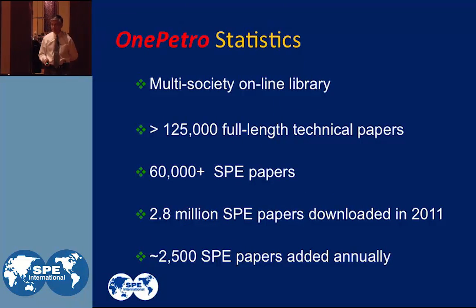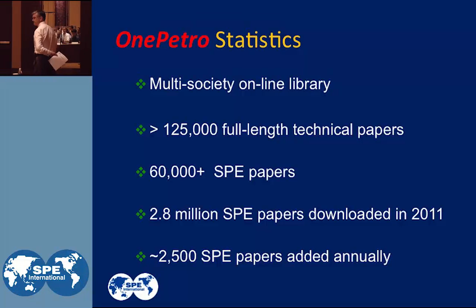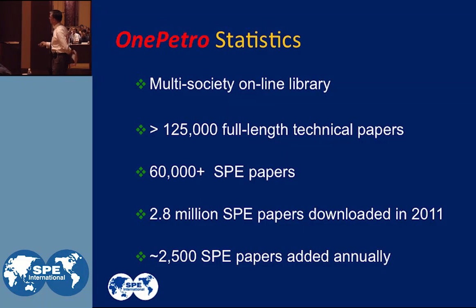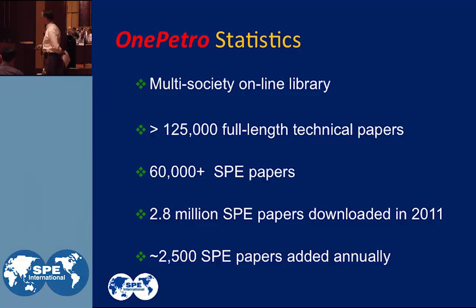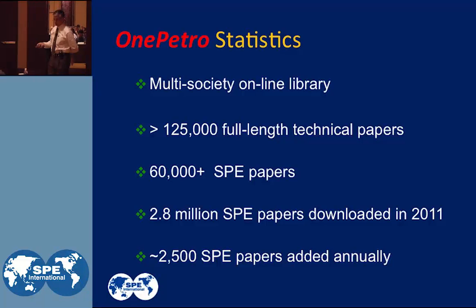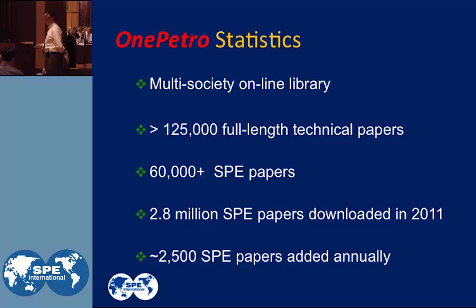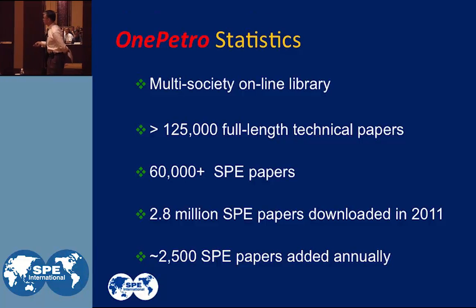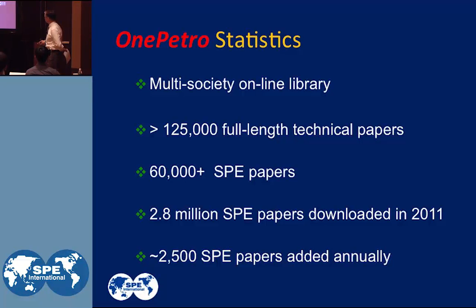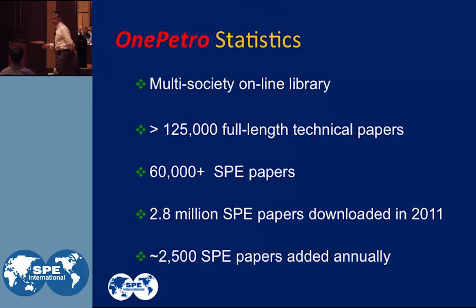A few guidelines and discussion about OnePetro statistics: OnePetro is the multi-society online library. It has over 125,000 full-length technical papers; about 60,000 of those are SPE papers, alongside NACE, JCPT, and other society papers. In 2011, 2.8 million papers were downloaded from OnePetro. About 2,500 papers are submitted annually — that's quite a lot of exposure.